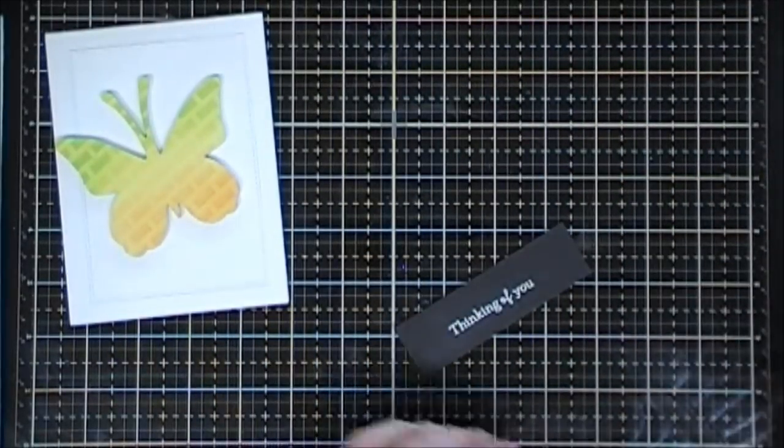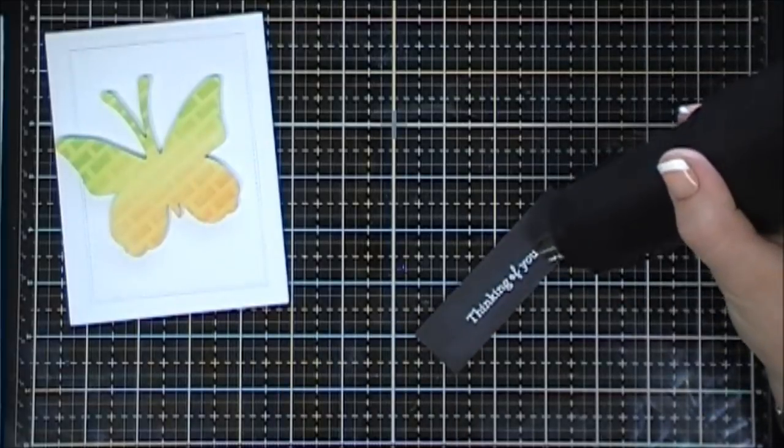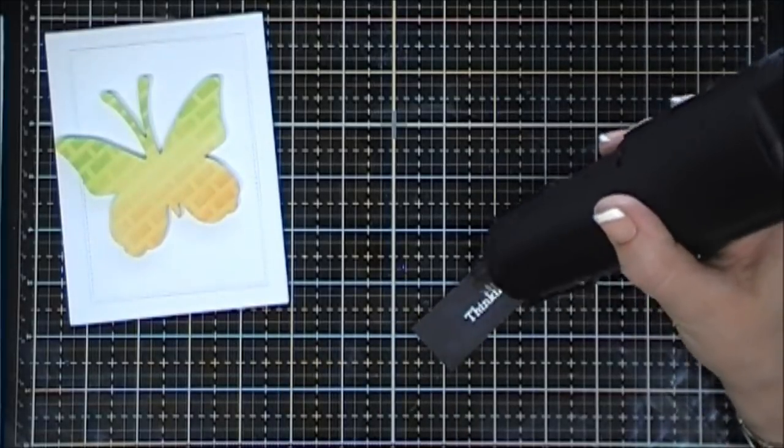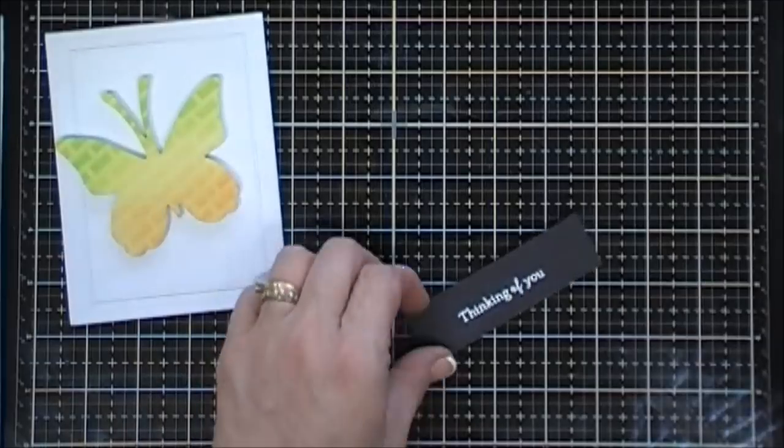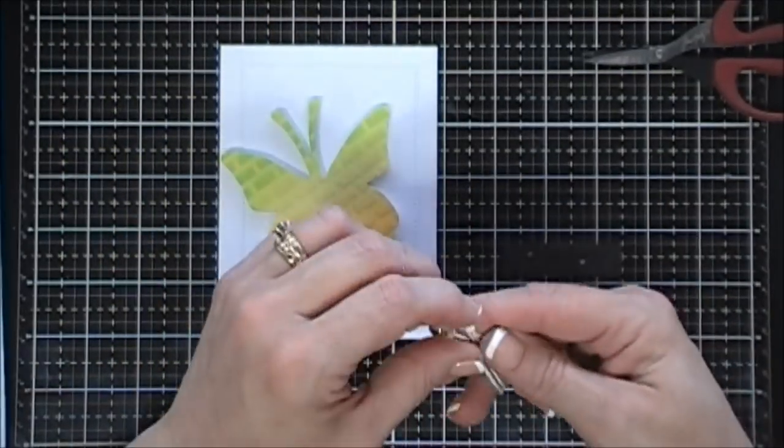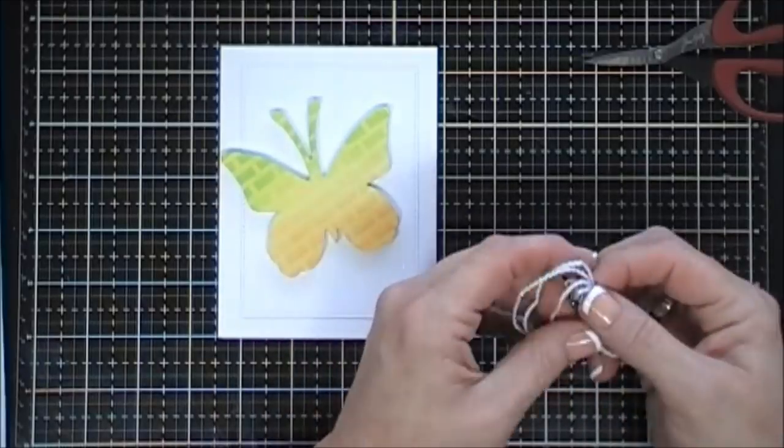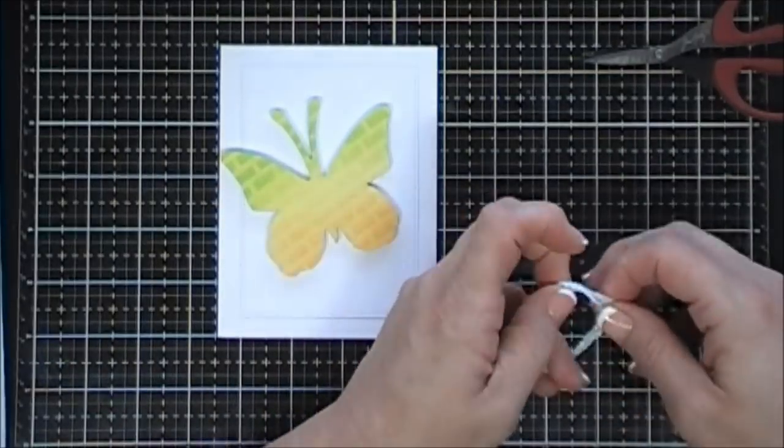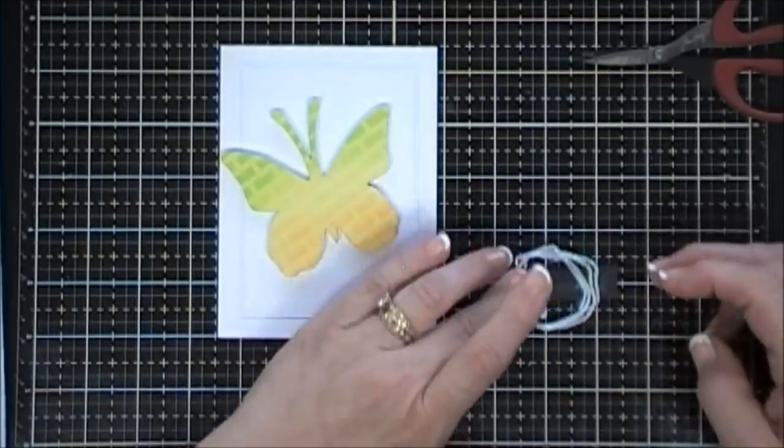But I stamped the sentiment from the same butterfly stamp set. This says thinking of you, and I just blocked it off, added a little bit of tape behind it. Now I want to add some sparkle, so this is some sparkle string. It's my favorite. It's the white one because it has an iridescent hue to it.